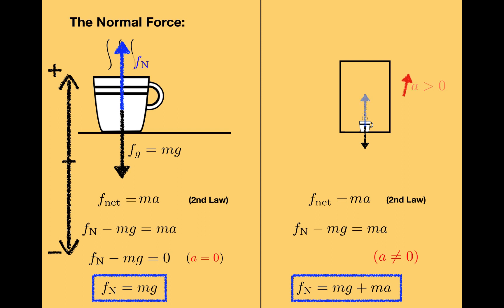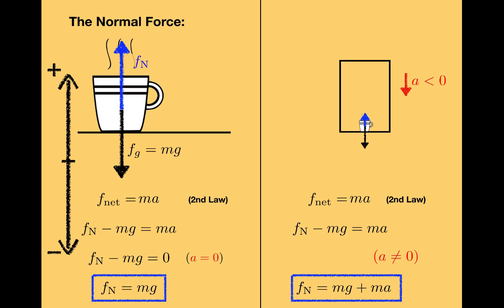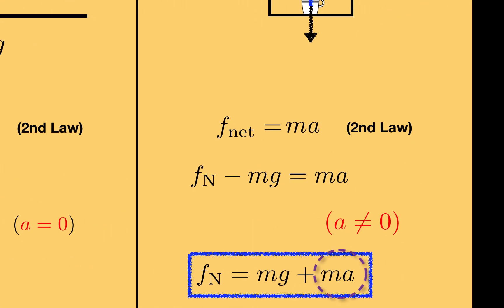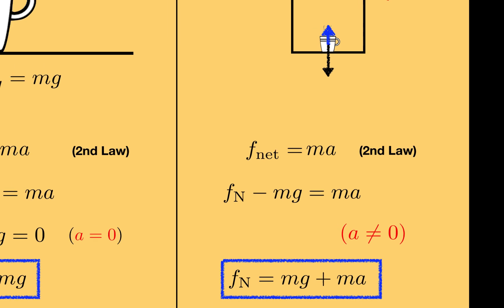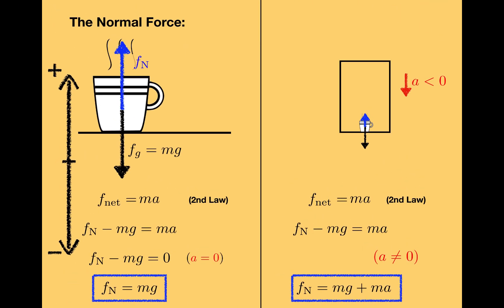If the acceleration is negative, the magnitude of the normal force will be less than mg. The normal force and mg are still the only two forces acting on the cup in this situation, so the equation that we derive still applies. But ma is now negative, so the magnitude of the normal force will be less than mg in that case. Once again, there are two ways to have negative acceleration. One is to go down and speed up, and the other is to go up and slow down.